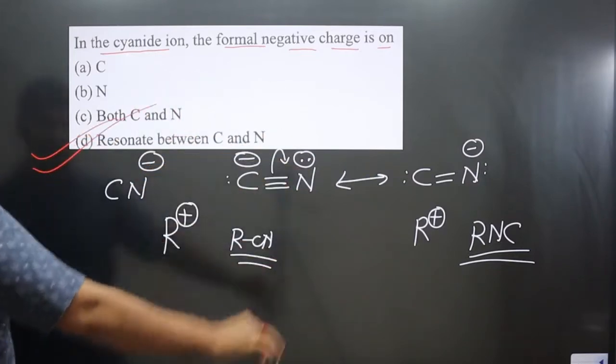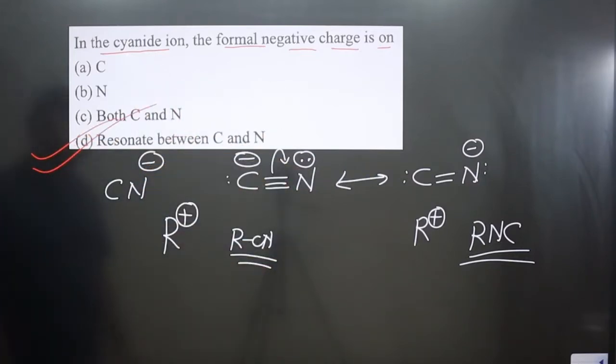So option D is correct: the formal negative charge resonates between carbon and nitrogen. If you like this video, please share and subscribe to the channel.